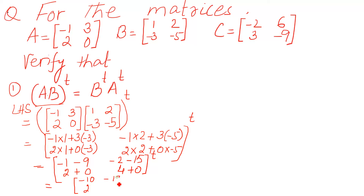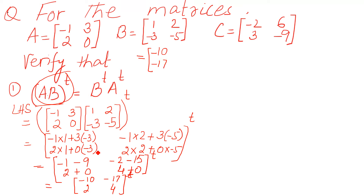We have four plus zero — do not forget this transpose — and here we have negative 10, negative 17, and 4, and again transpose. Now I will show you how to take the transpose one more time — it is very easy. This row, negative 10 and negative 17, is a row — make it a column. Similarly, 2 and 4 is a row — make it a column. This is the left hand side. This is called the transpose: convert rows into columns. Now there is no need to write down transpose because we have already taken it.